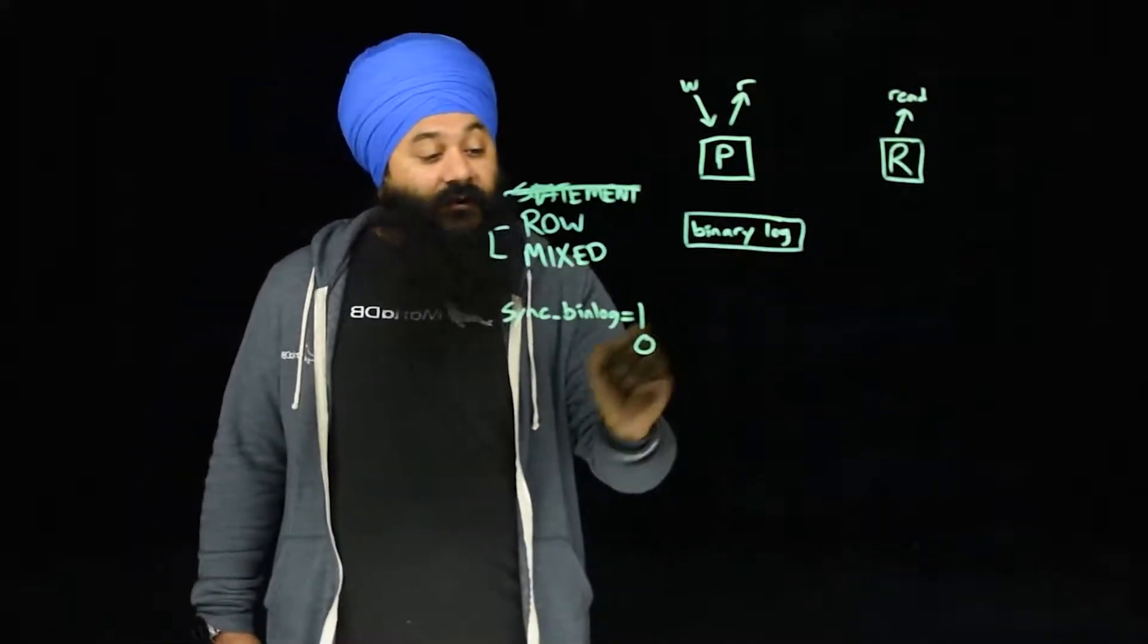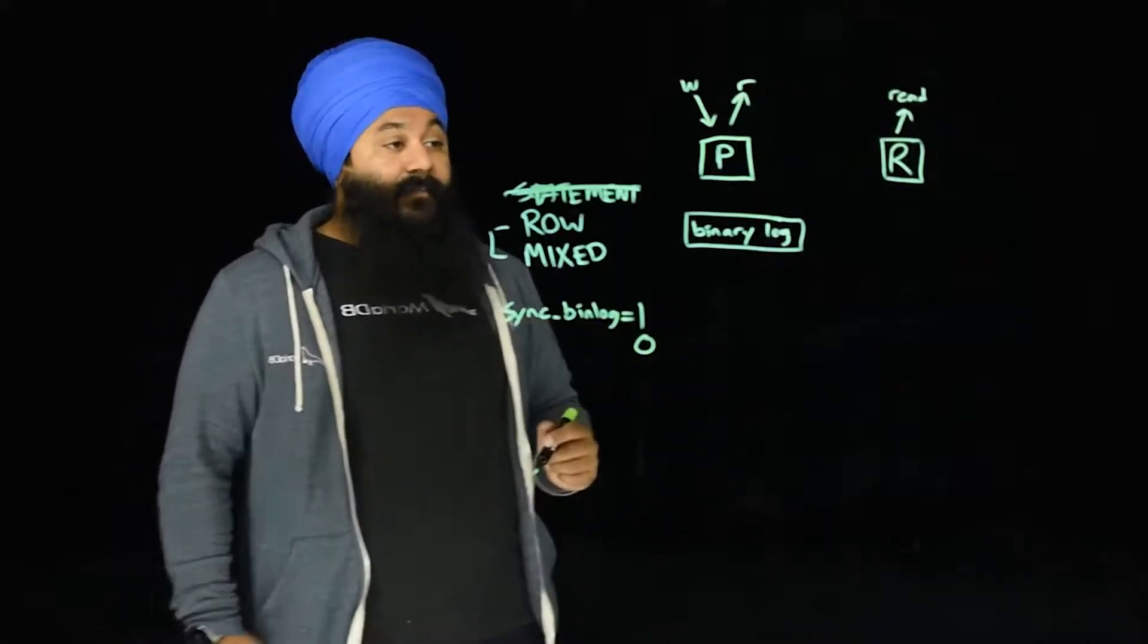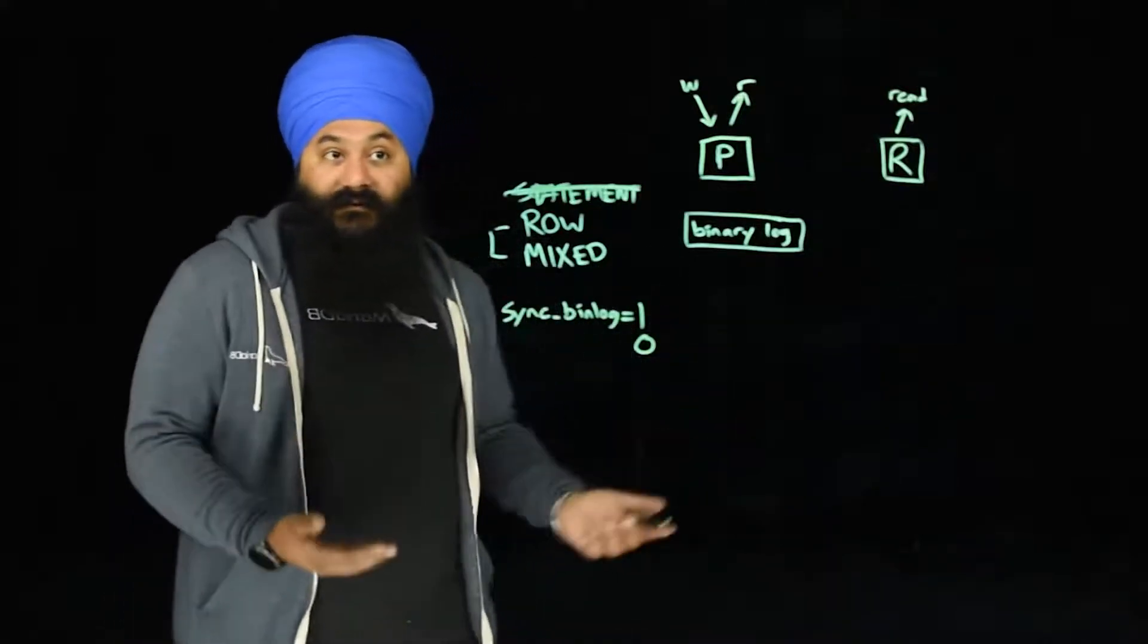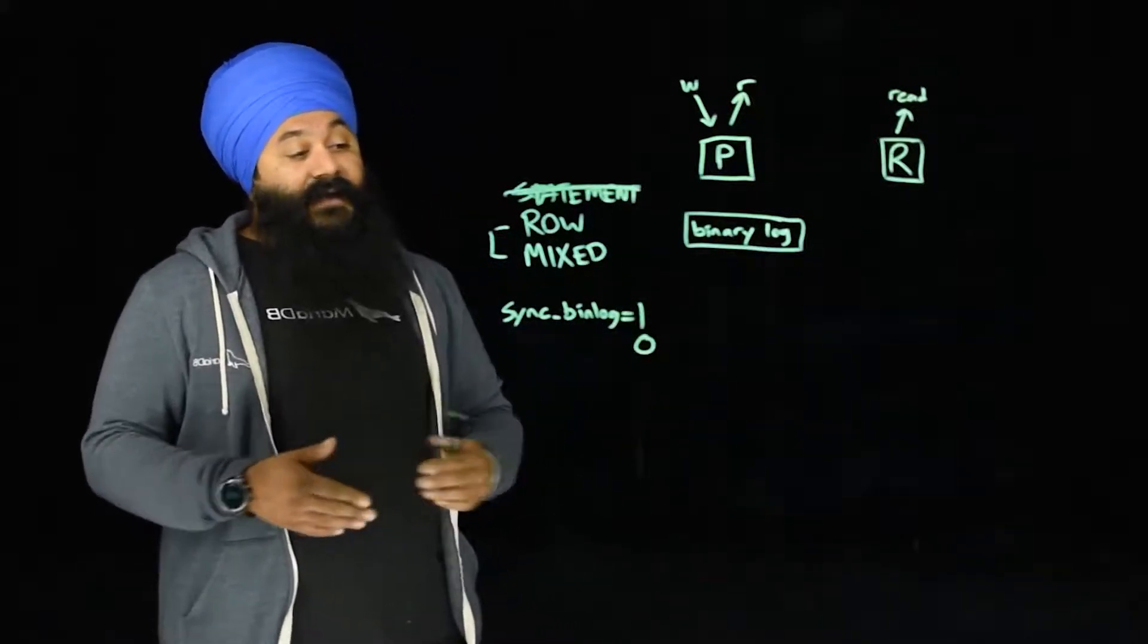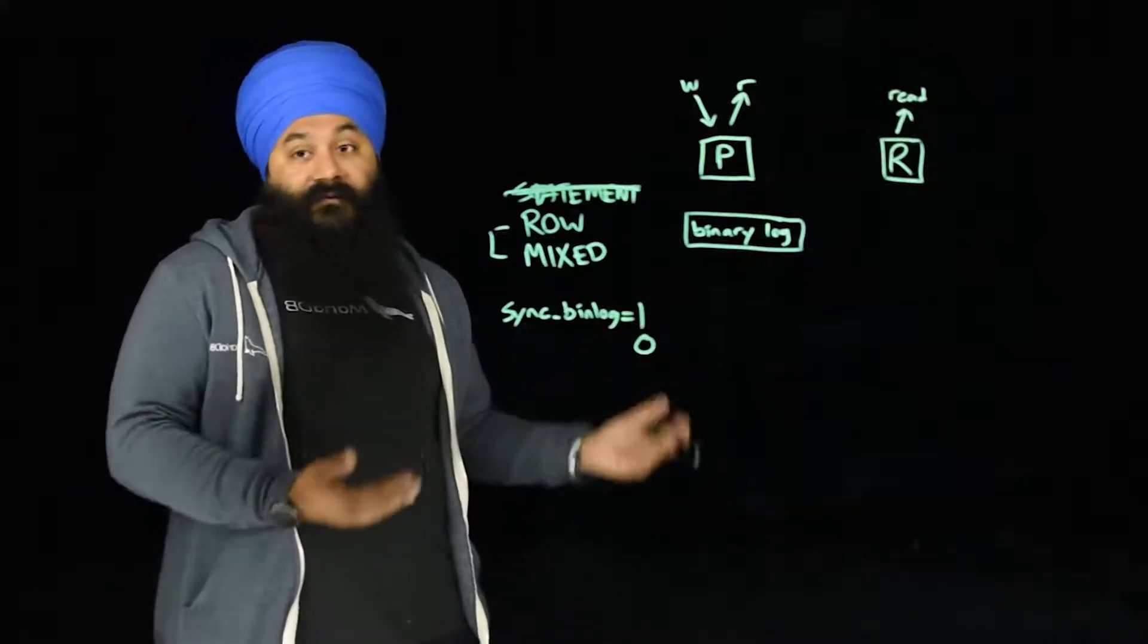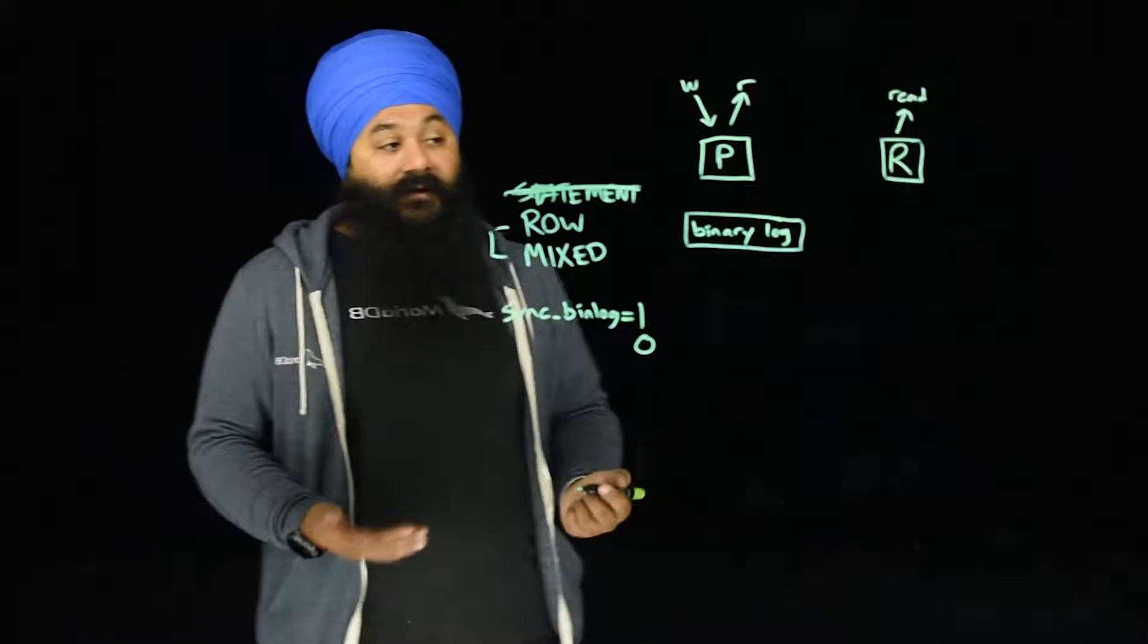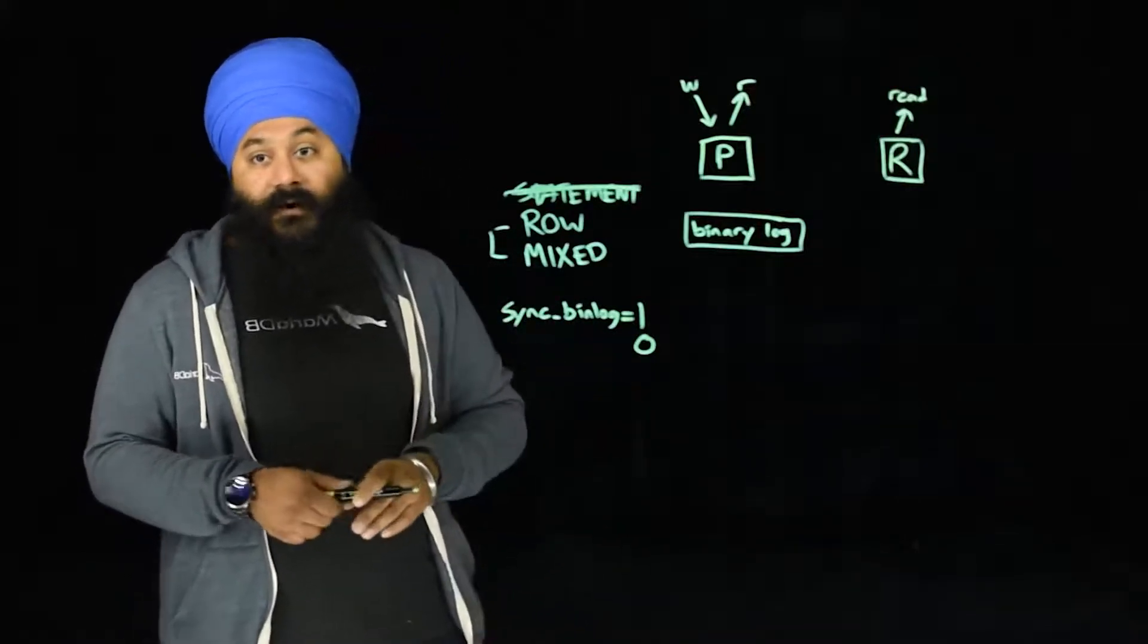The other options are zero, which means it will write whenever the binary log flushes to disk, it will get committed and persist on that binary log on disk. And then you could have a higher number than one, which means every n number of transactions. So every hundred transactions or every thousand transactions. These are all safe depending on your needs and requirements.